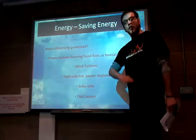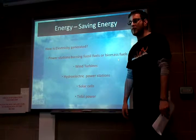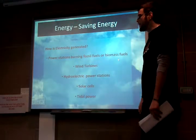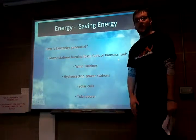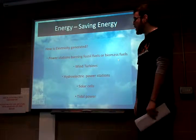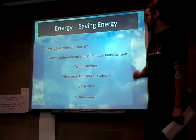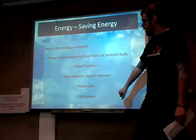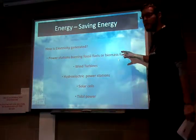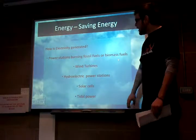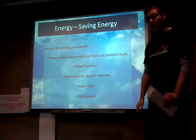Before we fully go on to how to save energy, let's go fully into exactly how electricity itself is actually created. In lesson five, we went through all the different types of non-renewables — fossil fuels — and the different types of renewable energy resources used to create electricity. We covered all of these except for tidal power. We had power stations for burning fossil fuels and biomass fuels, wind turbines, hydroelectric power stations, and solar cells and solar panels.